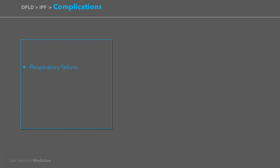Complications of the disease include respiratory failure — initially type 1, and in advanced disease type 2 respiratory failure develops. Other complications include pulmonary hypertension, development of cor pulmonale, which is right-sided heart failure secondary to idiopathic pulmonary fibrosis, and development of lung cancer, especially in patients who continue to smoke.